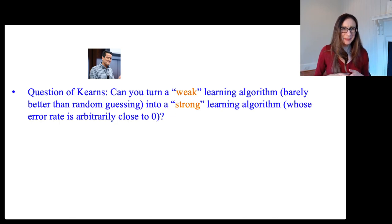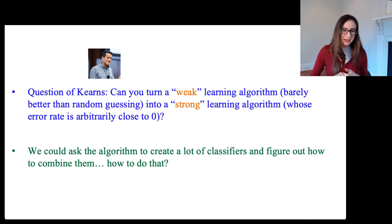And so you might be thinking, how could you do that? The idea he was getting at is that maybe you could send a whole bunch of different things into the weak learning algorithm and have it produce a lot of classifiers and figure out how to combine them. But how do you do that? What input would you put into this weak learning algorithm and how do you combine the outputs to form something that's better?